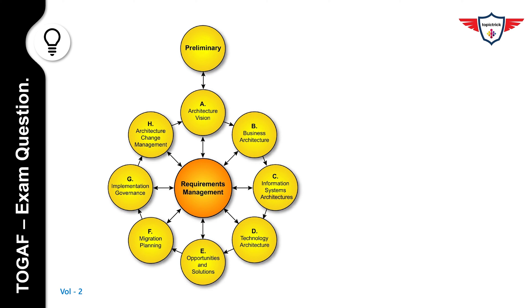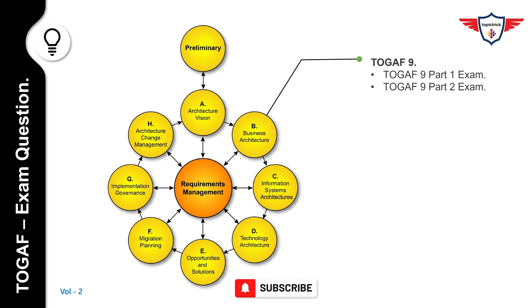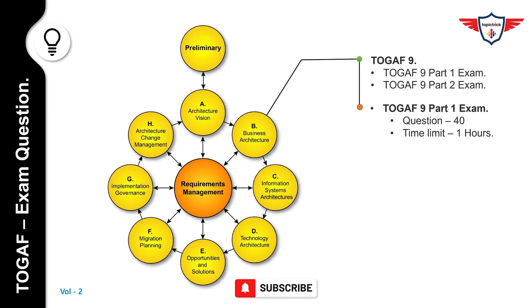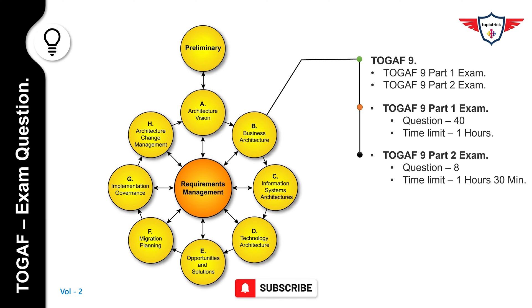Let's understand how the TOGAF 9 exam is organized. The Open Group has categorized TOGAF into two parts depending on the level or type of certificate you opt for. TOGAF 9 exam is divided into Part 1 and Part 2. In Part 1 you have 40 questions with a time limit of 1 hour. In Part 2 you have 8 questions with a time limit of 1 hour 30 minutes. You also have an option to take both parts as a combined exam with 48 questions and a time limit of 2 hours 30 minutes. Let's go through TOGAF practice questions and answers.